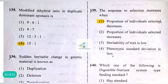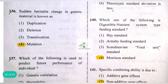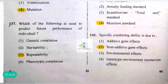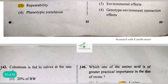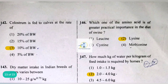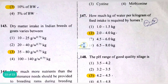Exchange of genetic material between non-homologous chromosomes is known as translocation. The response to selection increases when the proportion of individuals selected decreases. The digestible nutrient system standard is the Morrison standard. Specific combining ability is due to non-additive gene effects. Colostrum is fed to calves at the rate of 10% of body weight.